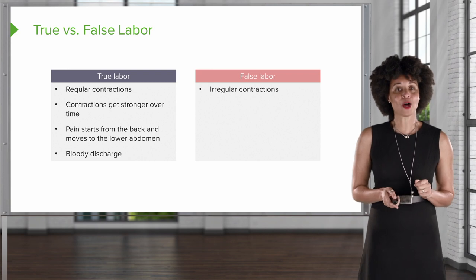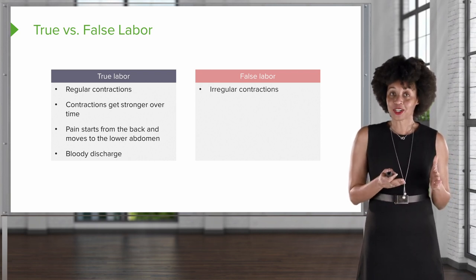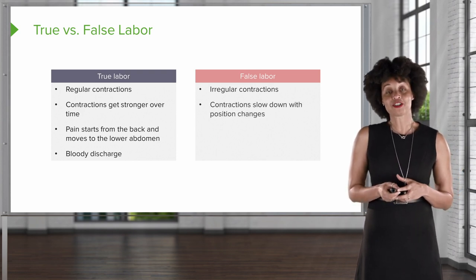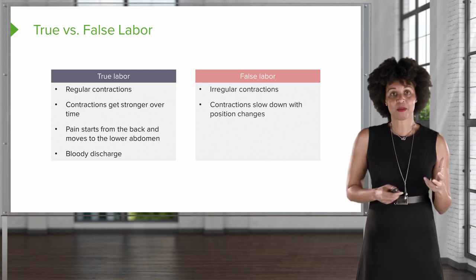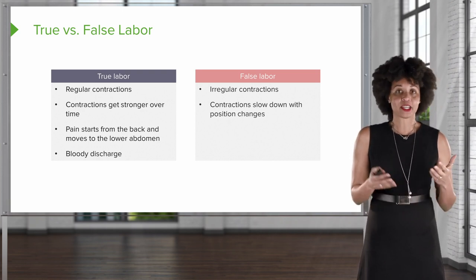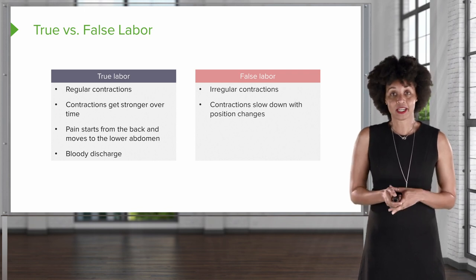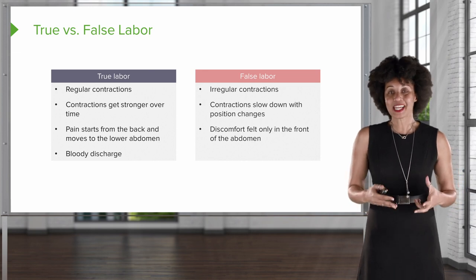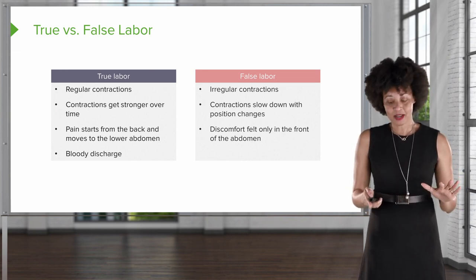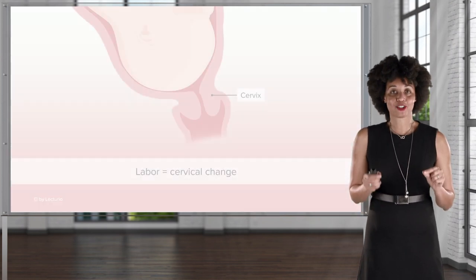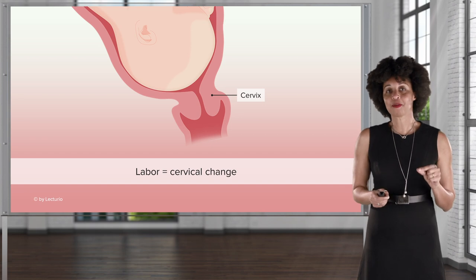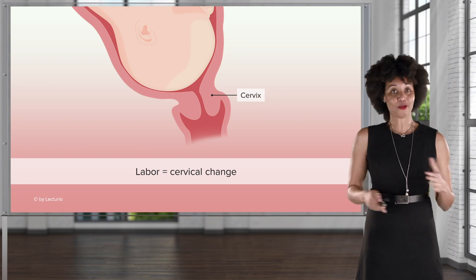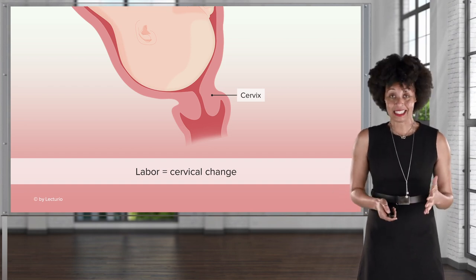What are some signs of false labor? If regular contractions are a sign of true labor, then irregular contractions are a sign of false labor. If the contractions slow down with position changes — for example, the patient is walking and sits down and contractions slow — that's consistent with false labor. Also, if there's only discomfort in the front of the abdomen, that's usually not a sign of labor. The ultimate sign is cervical change: the true definition of labor is that the cervix makes a change. Without cervical change, no matter the other signs and symptoms, it's not really labor.